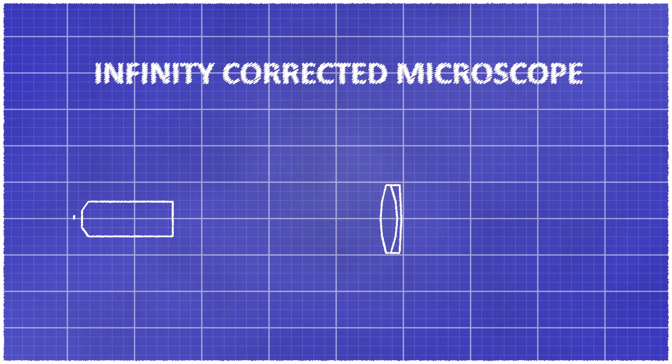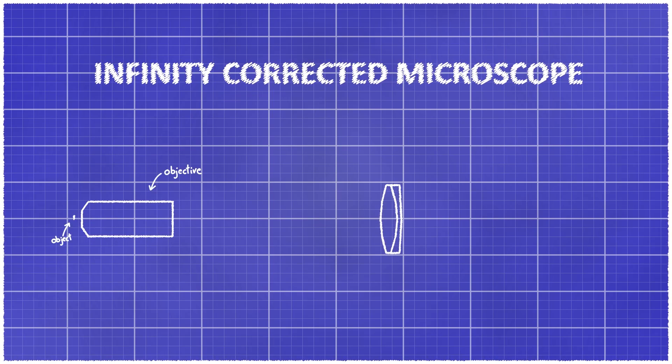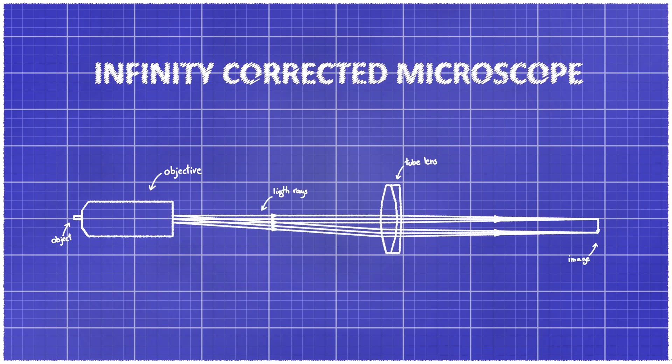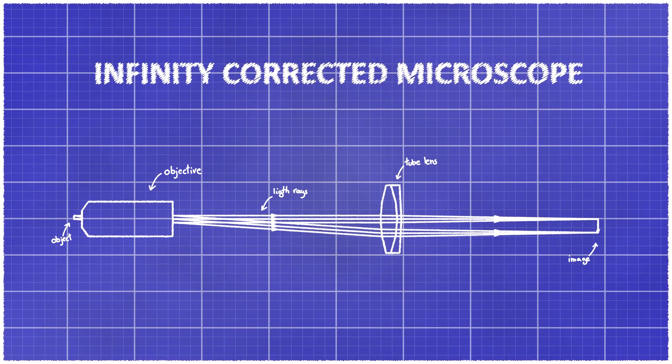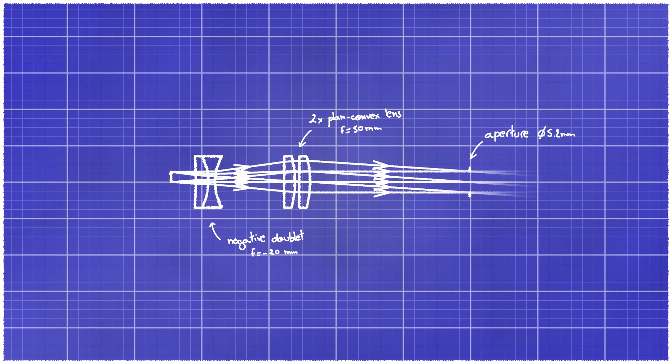This is a conventional infinity corrected microscope setup. There is an object, a microscopy objective and a tube lens. Light rays emerging from the object are collimated by the objective and re-imaged by the tube lens on the sensor plane. Here we will focus only on the microscope objective. We see that the objective is composed of several lenses including a negative doublet, two plano-convex lenses, but also an aperture. The question is why do we need all these elements? Why can't we just use a single lens? And the answer is because of optical aberration.